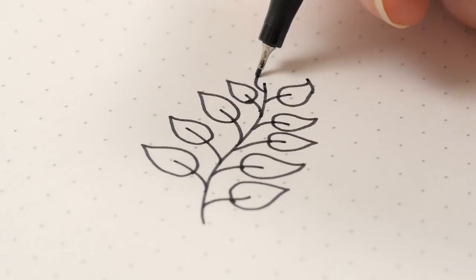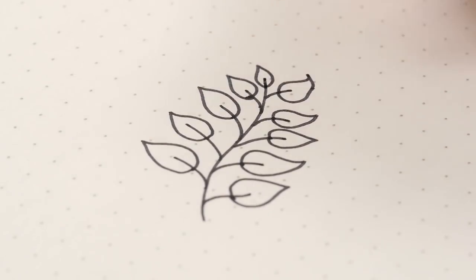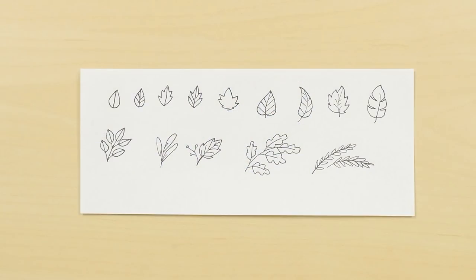To create a whole branch, add a bunch of these together. Change the shape of the leaf, or add details on the leaf to create different looks.